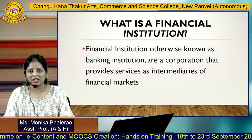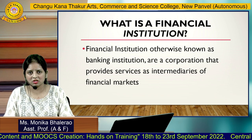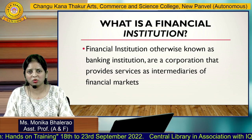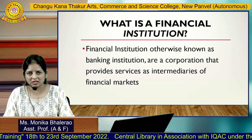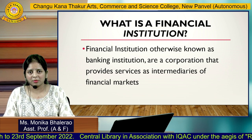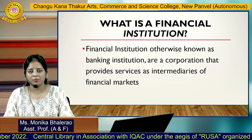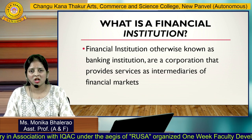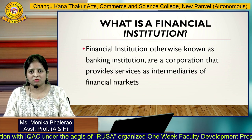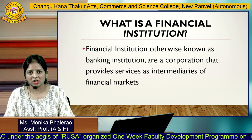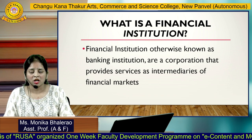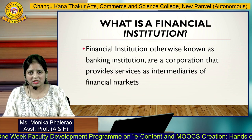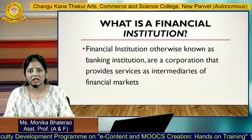The first important component is financial institutions. Financial institutions are those which give the platform to buy and sell all your securities and shares that are traded in the financial markets and the financial system. Popular examples are banking institutions, insurance institutions, and NBFCs — Non-Banking Financial Companies. These institutions act as intermediaries between the savers and the borrowers.